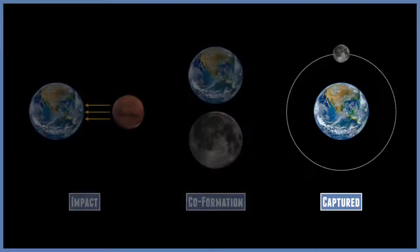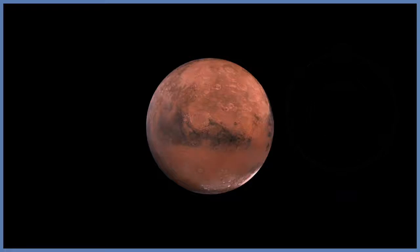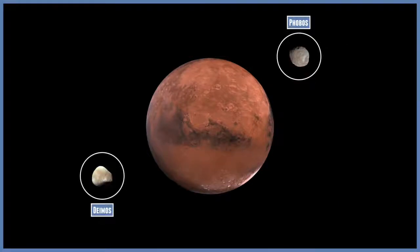The third one is called a capture theory, and this is rather plausible. A great example of this is the moons of Mars, Phobos and Deimos. These are basically captured asteroids, taken in by the gravity of Mars. So they are technically moons, even though they're not spherical.